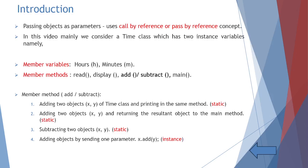The read method reads hours and minutes; display shows them. The add or subtract method adds two objects or subtracts the contents of two objects, and main calls all these methods. The first program adds two objects by taking two parameters of Time class — x and y — and prints in the same method. It is a static method.